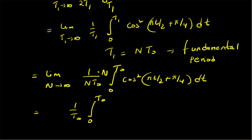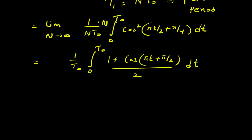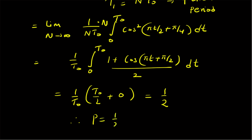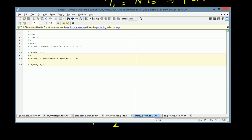The cos² function can be written using the trigonometric identity as (1 + cos(πt + π/2)) / 2 dt. Since T₀ is the fundamental period, the second part of the integral is zero, so we have (1/T₀) × (1/2) × T₀ = 1/2. Therefore, the power equals 1/2. Now let us verify these results in MATLAB.